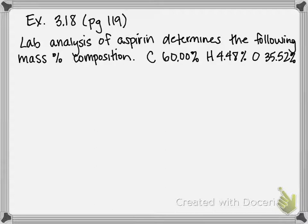Carbon is 60%, hydrogen is 4.48%, and oxygen is 35.52%. If you're given percentages instead of mass amounts, we can just assume that we're given 100 gram samples and translate these percentages into grams. So 60% carbon becomes 60 grams of carbon, hydrogen becomes 4.48 grams, and oxygen becomes 35.52 grams.